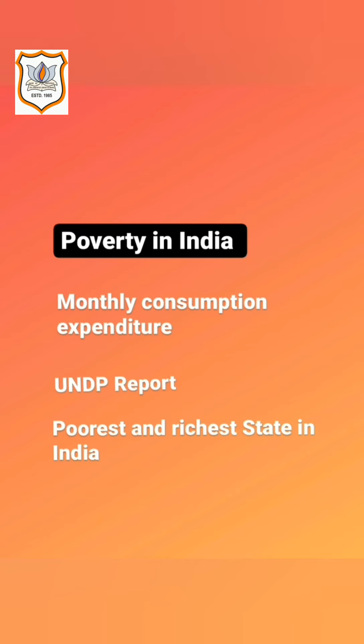According to the UNDP report, the estimated BPL population was 27 crores, which was 21.9% of the total population of India. As per the UNDP report, 21.92% of India's population lived below the poverty line in 2011-12. The proportion of poverty in rural and urban areas was 25.7% and 13.7% respectively.